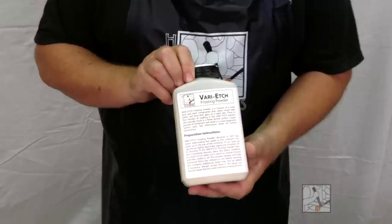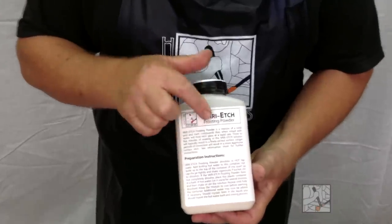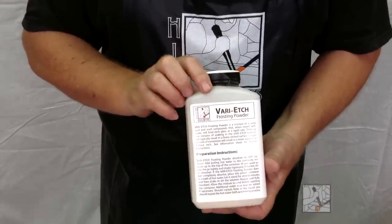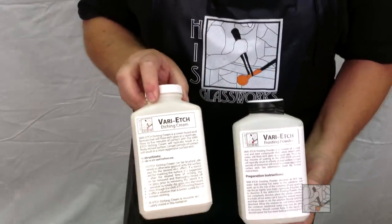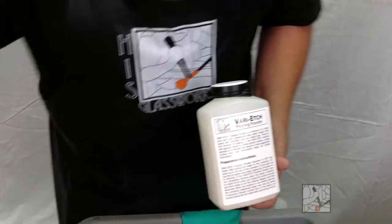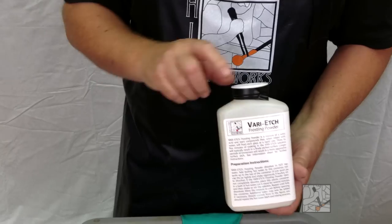I'm going to be demonstrating and talking about Vari-Etch products: etching solution, a powder which we add hot water to to make the liquid, and also Vari-Etch etching cream, something that is painted on to do decorative etching.